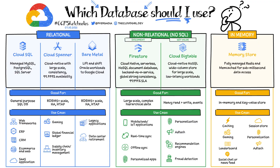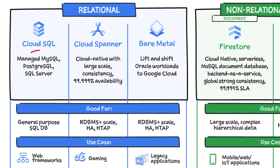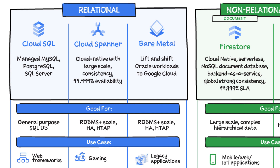There are three relational database options in Google Cloud: Cloud SQL, Cloud Spanner, and Bare Metal Solution. Cloud SQL provides managed MySQL, PostgreSQL, and SQL Server databases on Google Cloud. It reduces maintenance cost and automates database provisioning, storage capacity management, backups, and out-of-the-box high availability and disaster recovery.